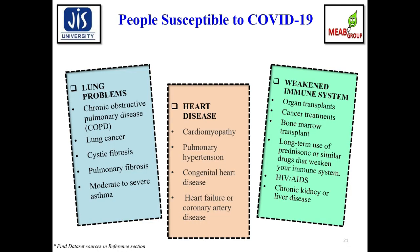People highly susceptible to COVID-19 include those with lung problems such as COPD, lung cancer, cystic fibrosis, pulmonary fibrosis, and moderate-to-severe asthma. Patients with heart diseases such as cardiomyopathy, pulmonary hypertension, congenital heart disease, heart failure, or coronary artery disease are also at high risk. Immunocompromised patients — including organ transplant recipients, those on cancer treatment, bone marrow transplant patients, long-term immunosuppressant users, HIV/AIDS patients, and those with chronic kidney or liver diseases — face high susceptibility.